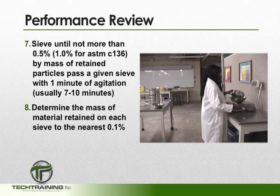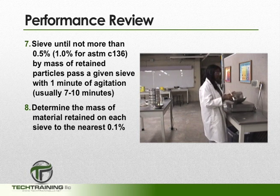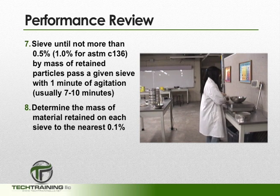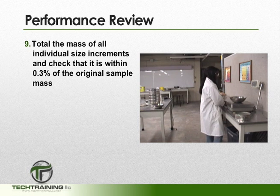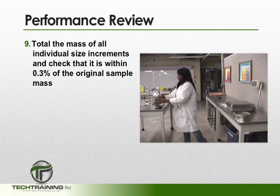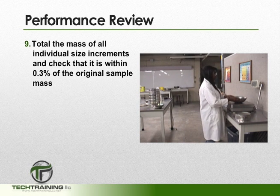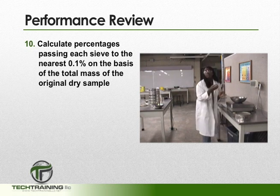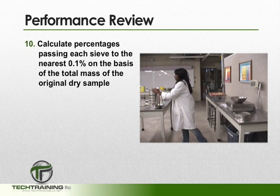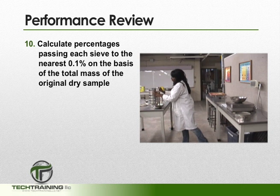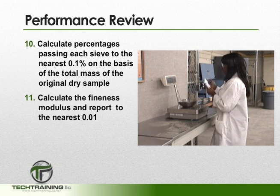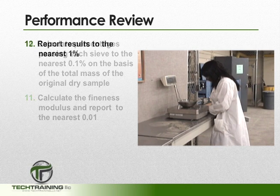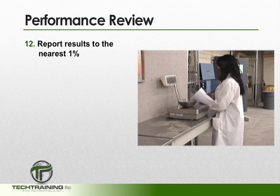After sieving, we want to determine the mass of material retained on each sieve to the nearest 0.1%. Then, total the mass of all individual increments and check that it is within 0.3% of the original sample mass. Next, calculate the percentages passing each sieve to the nearest 0.1% on the basis of the total mass of the original dry sample. Then, calculate the fineness modulus and report to the nearest 0.01. Finally, report all results to the nearest 1%.